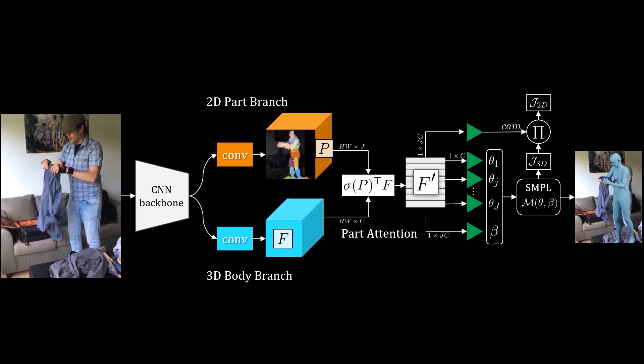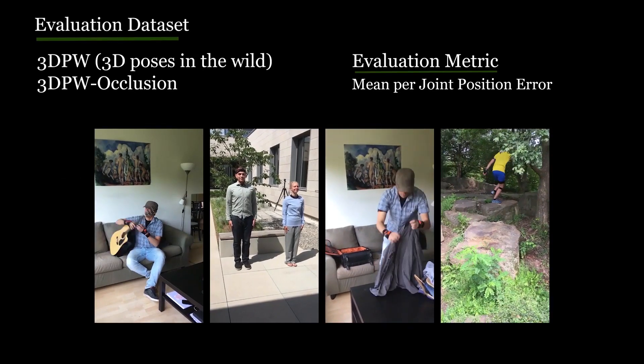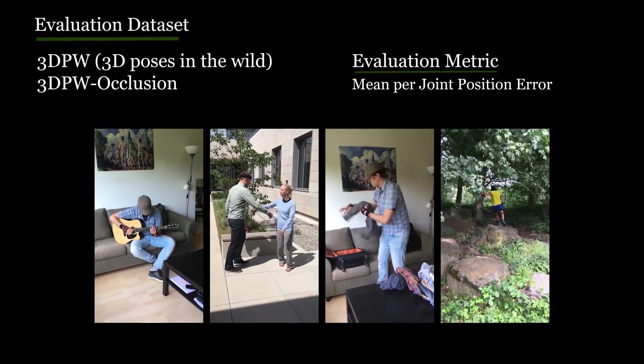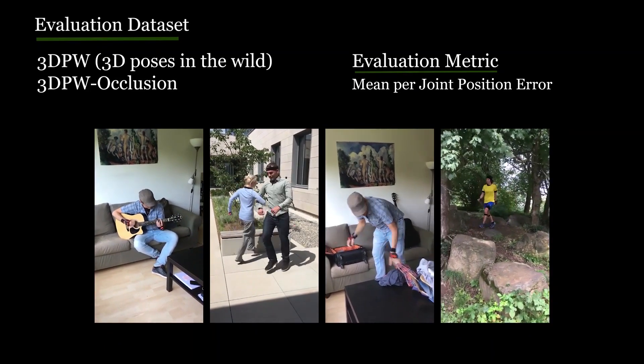To supervise the model, we utilize a simple parameter loss and 2D and 3D joint losses. For training, we use 3D ground truth and in-the-wild datasets mixed together. We perform qualitative and quantitative experiments to measure how PEAR performs in comparison to previous work. 3D-PW and its 3D-PW-OCC subset are used to measure performance quantitatively.